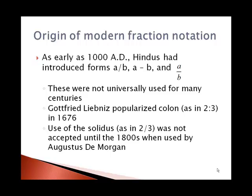These forms included A slash B, A with what looks like a hyphen or today's minus sign followed by B, and what looks like a modern A over B with a fraction bar. These were not universally used for many centuries.